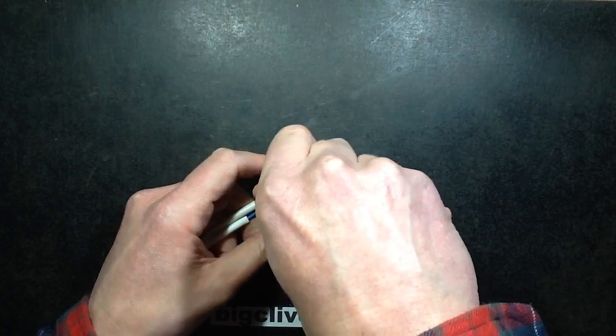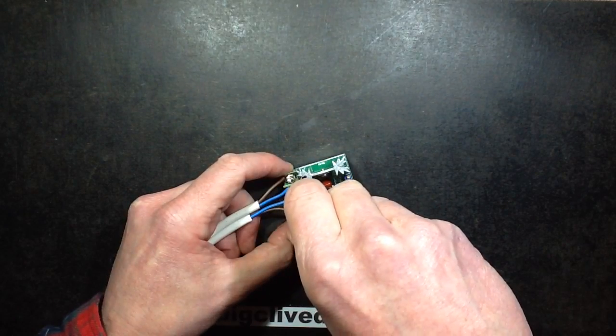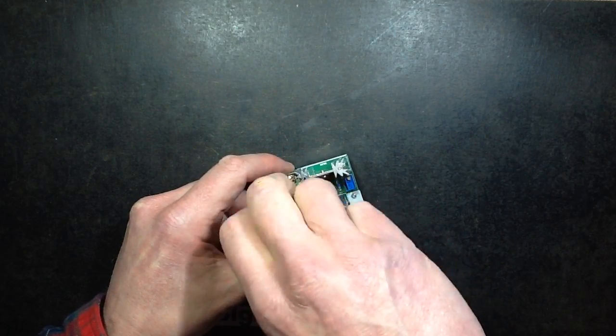I'm going to take the wires off and I think we'll just reverse engineer this because it's a standard dimmer circuit.